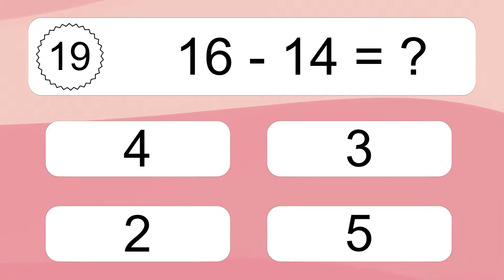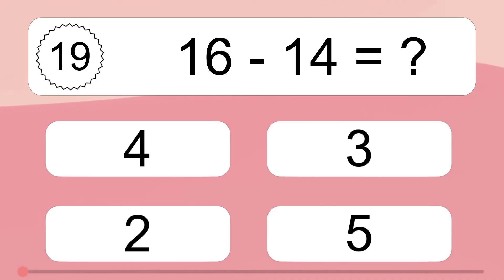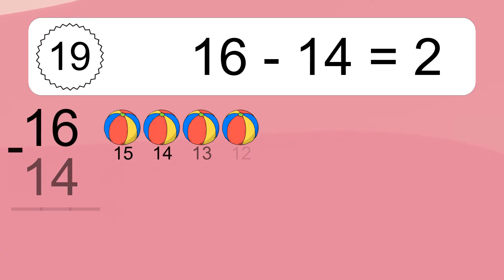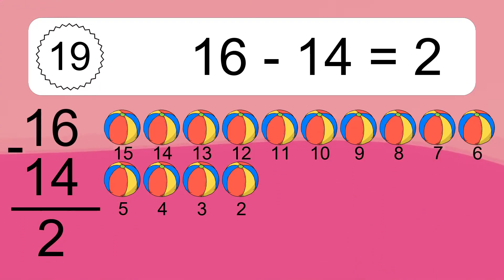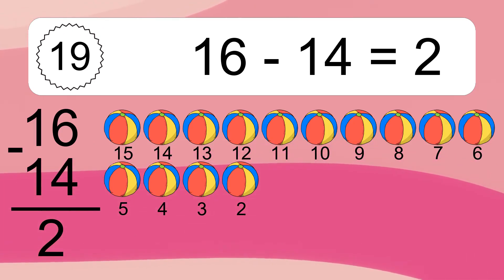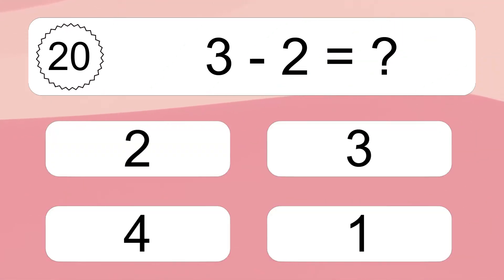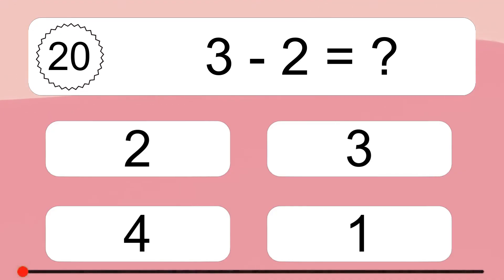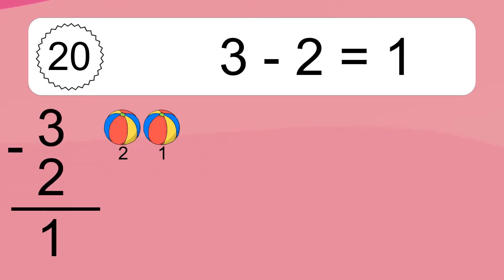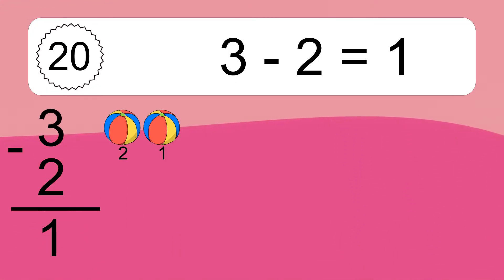16 minus 14 equals what? 9, 8, 7, 6, 5, 4, 3, 2. 3 minus 2 equals what? 3 minus 2 equals 1. Let's count it. 3, 2, 1.